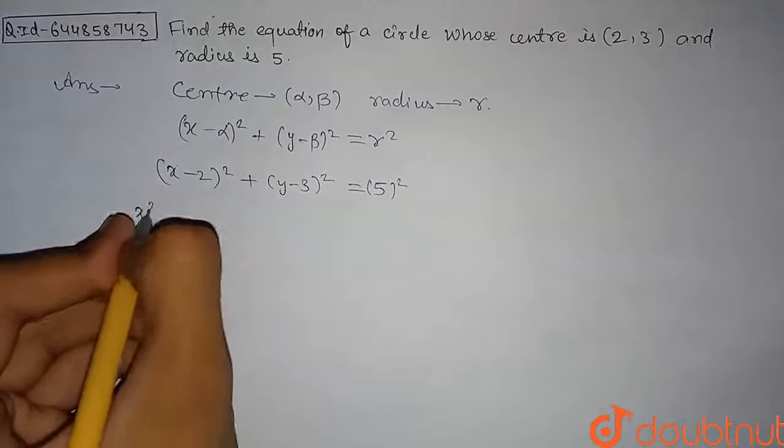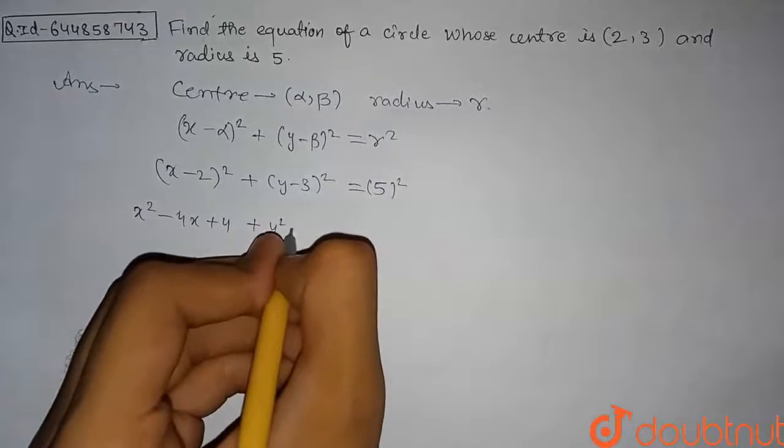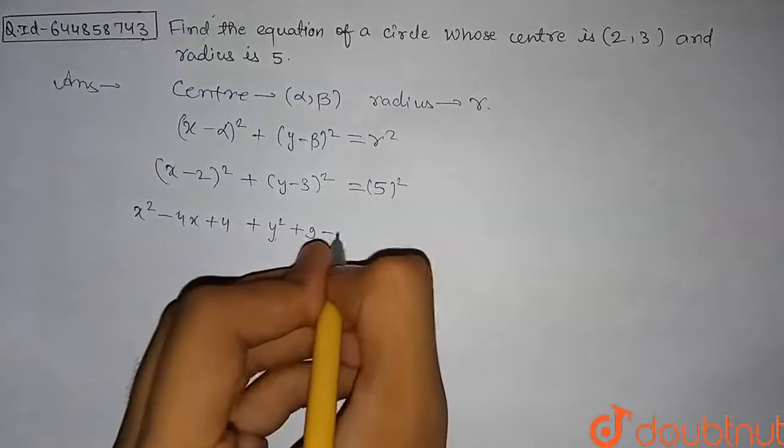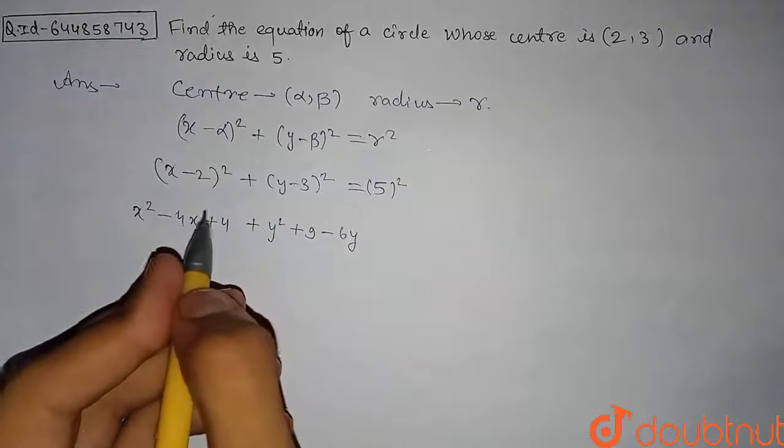Here will be -4x and here will be +4. Similarly here will be y², here will be +9 and -6y because we are opening these brackets by using (a - b)² which is equal to a² - 2ab + b².